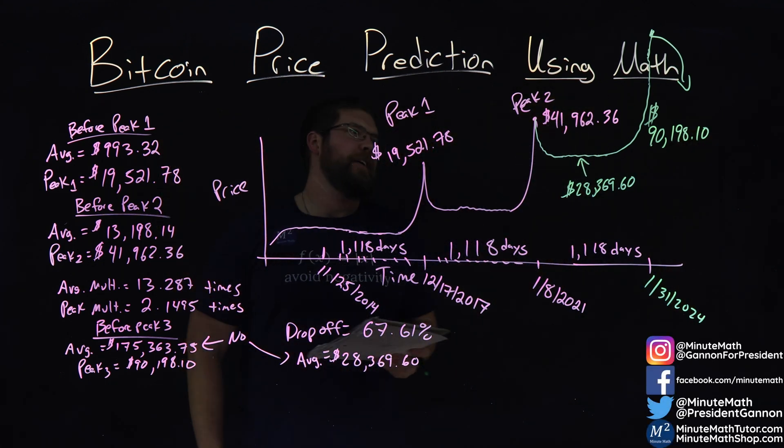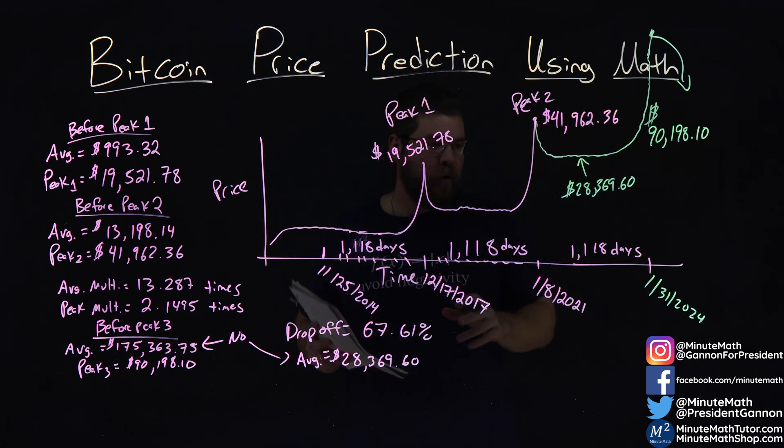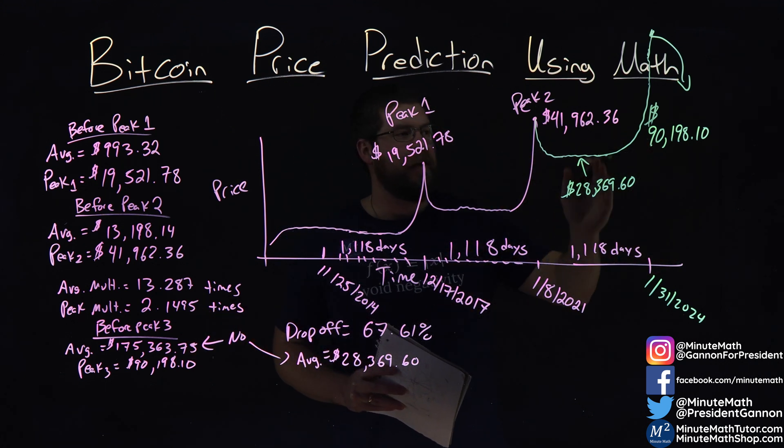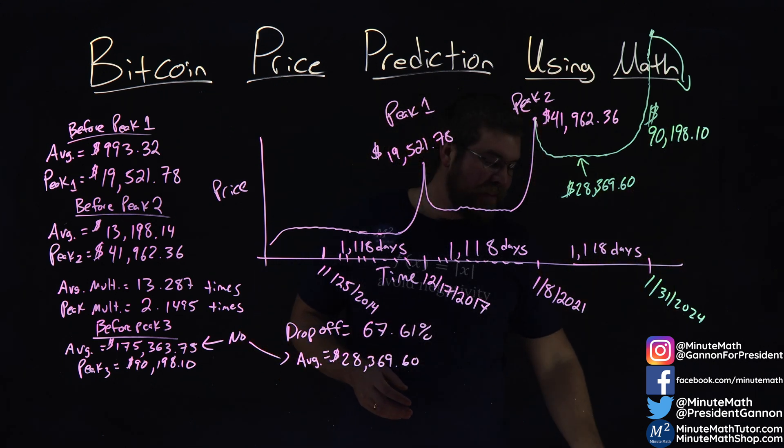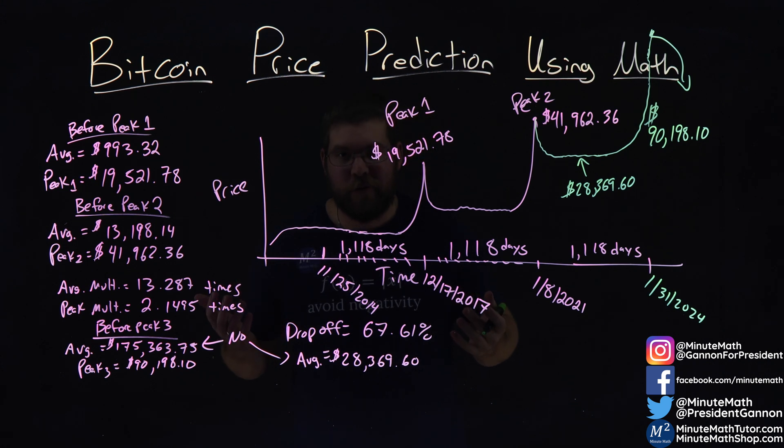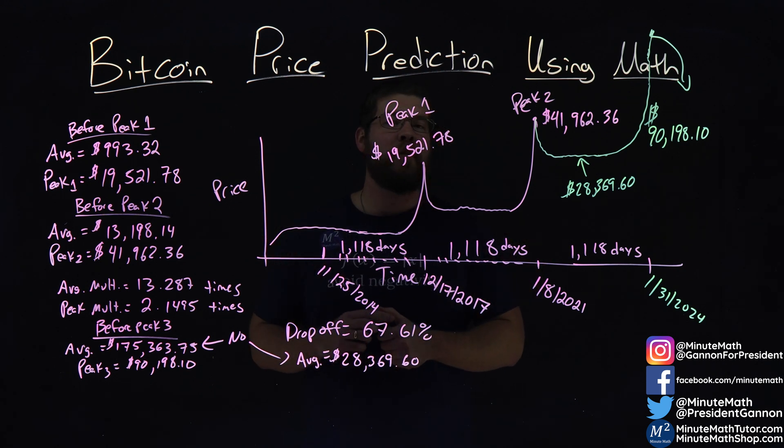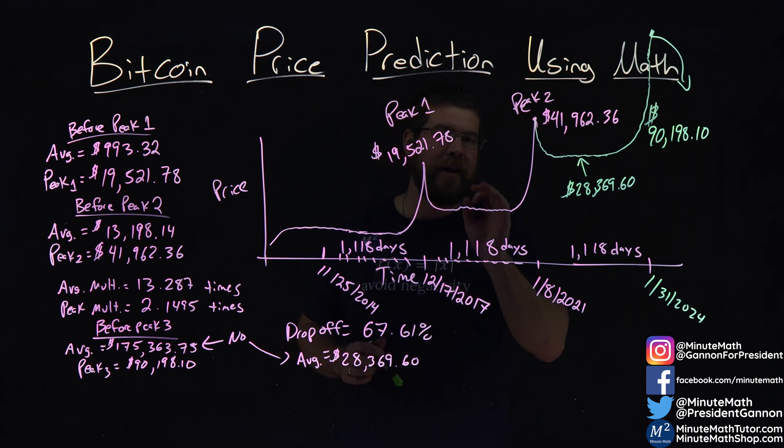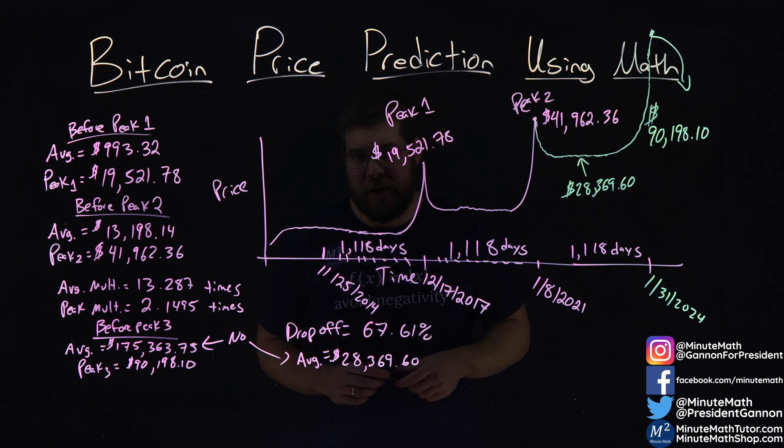So after all this mathematics here, we would have a new peak of a theoretical Bitcoin on January 31st, 2024, of $90,198.10. But, let's be honest, who knows, right? No math is going to really predict Bitcoin, and it is quite the mystery. And anyone who's telling you they know exactly how to buy and sell Bitcoin and got it perfectly is probably lying. Because if they really knew that, well, they wouldn't be telling you. They'd be multi-millionaires.